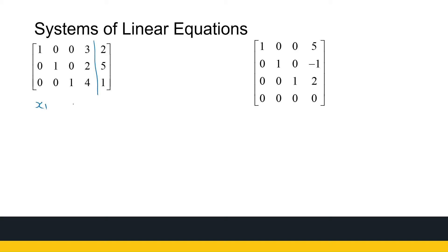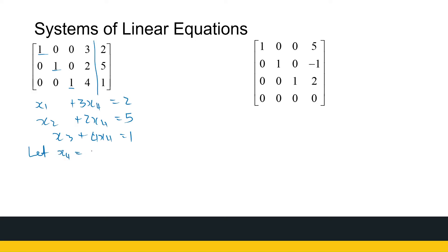Writing this as equations: X1 plus 3X4 equals 2; X2 plus 2X4 equals 5; X3 plus 4X4 equals 1. You'll notice we've got leading ones for X1, X2, and X3, but there's no leading one for X4. So X4 is my free variable. Let X4 equal T, where T is some real number. Then X1 equals 2 minus 3T, X2 equals 5 minus 2T, and X3 equals 1 minus 4T. That gives us an infinite number of solutions.